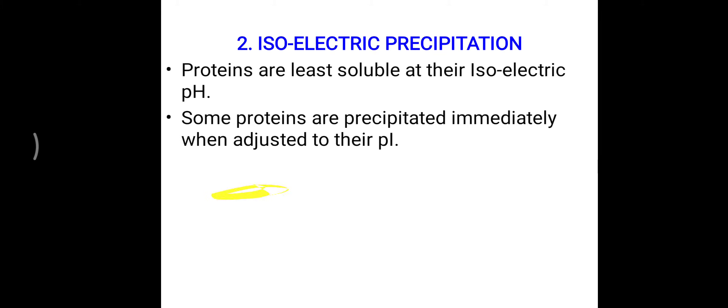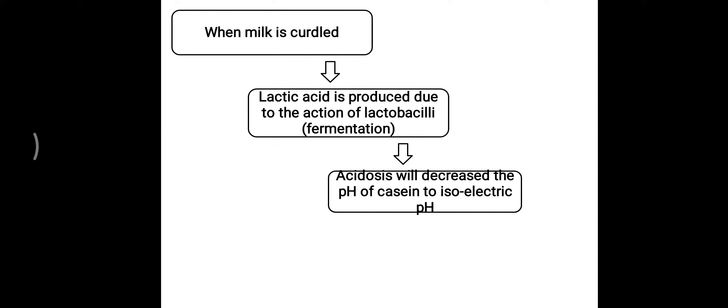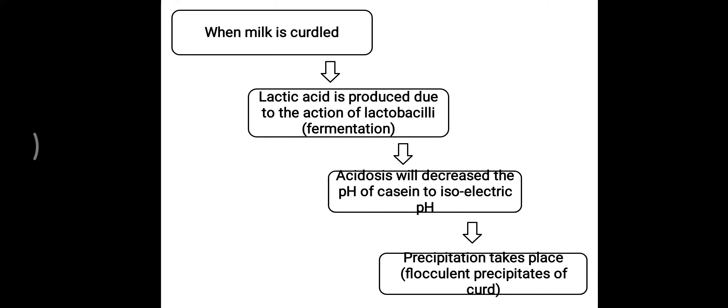The curdling of milk is a simple example of precipitation by isoelectric point. Lactic acid is produced by the action of Lactobacilli, leading to fermentation. The lactic acid generated decreases the pH of casein down to its isoelectric point of 4.6, and at this isoelectric point, precipitation takes place, forming a flocculent precipitate — the curd. This is the simple principle of isoelectric point precipitation applied when milk is curdled.